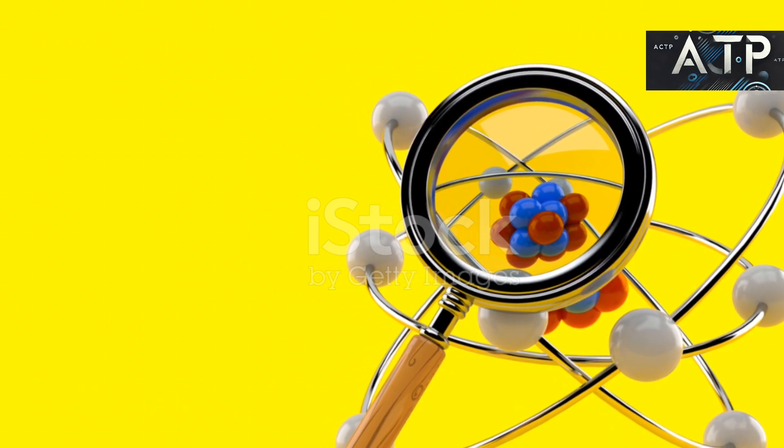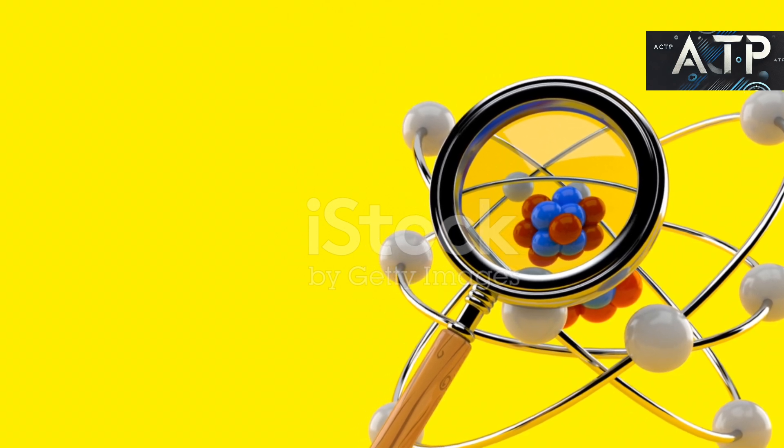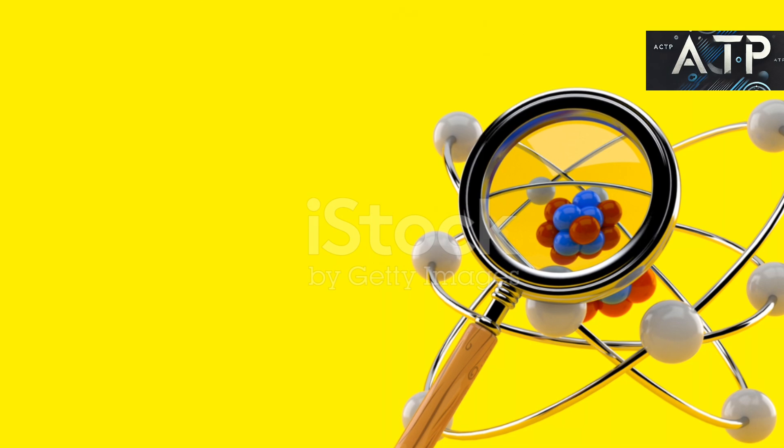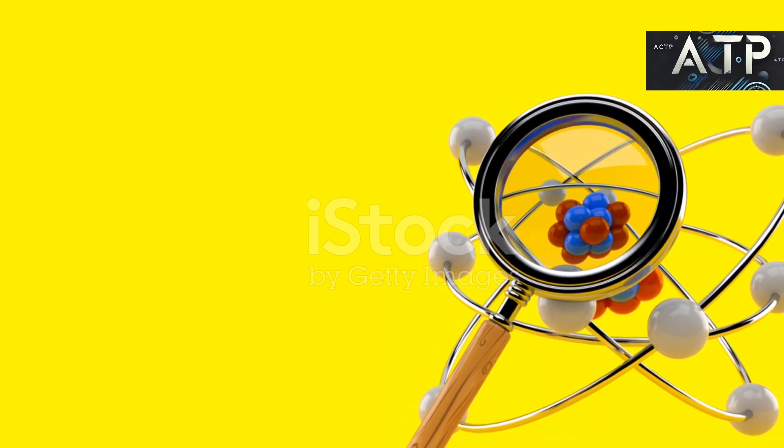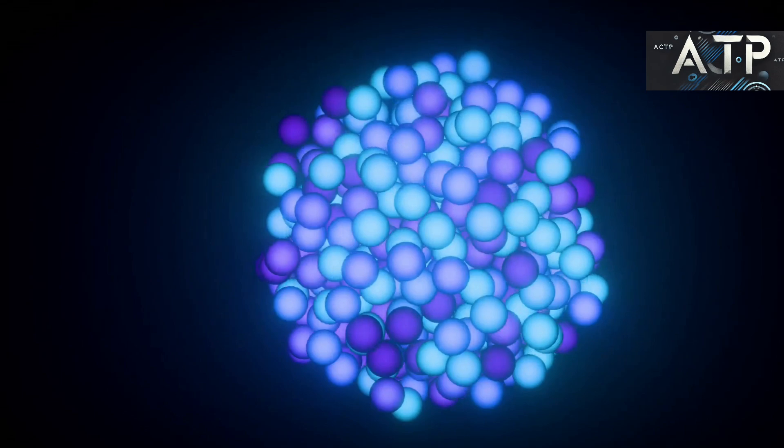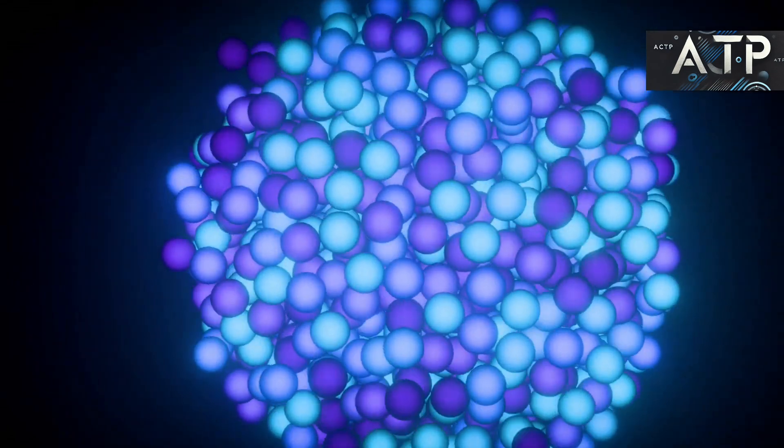Nuclear deformation: Prolate and oblate shapes. Not all nuclei are perfect spheres. In fact, many nuclei are deformed, and they usually take one of two common shapes. Prolate rugby ball shape: Imagine a sphere stretched along one axis, resembling a rugby ball or an American football.